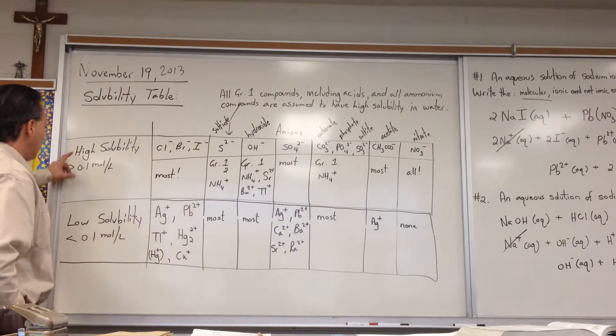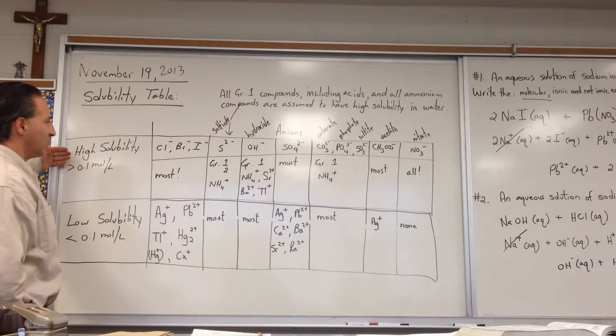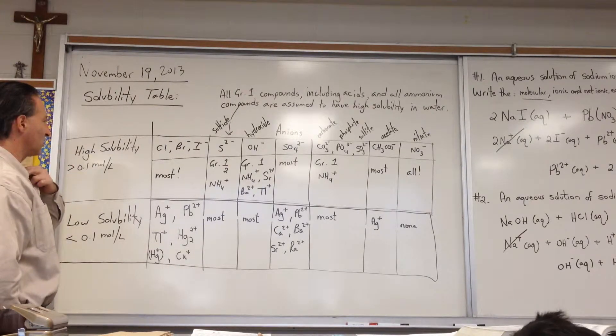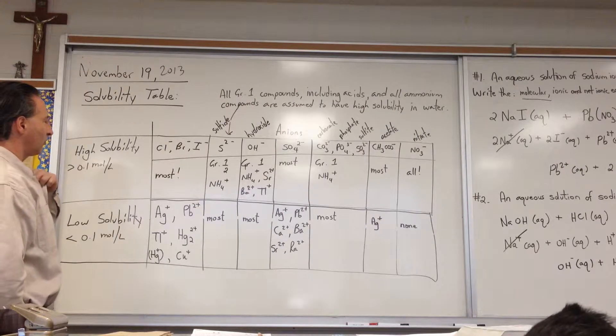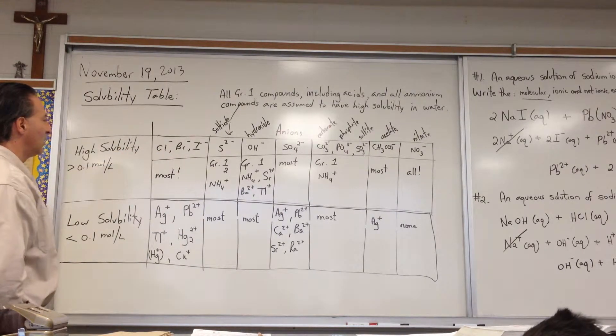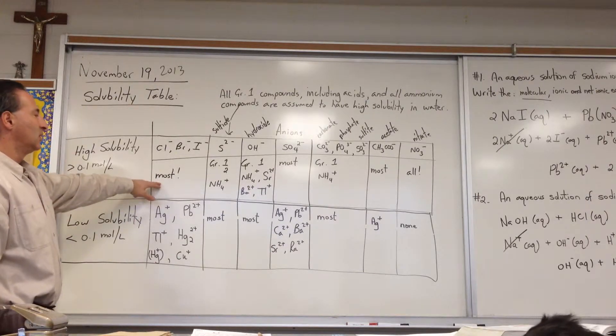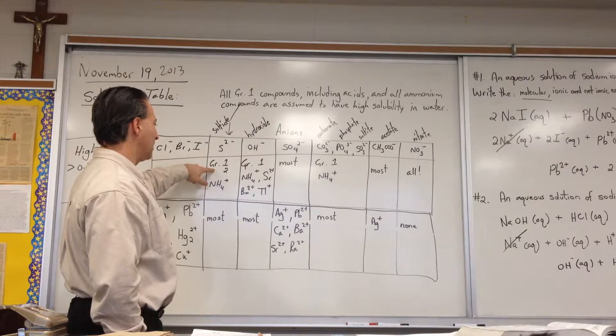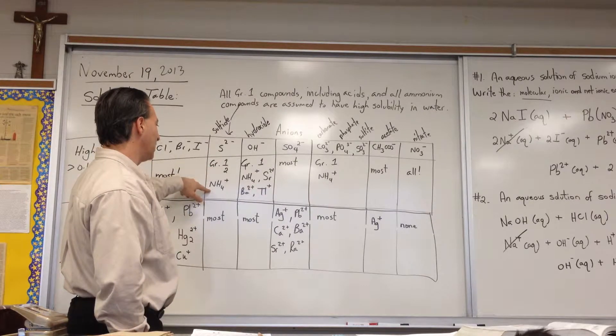I've made the table into two tiers: the high solubility and the low solubility salts. High solubility salts, like chlorides, bromides, iodides, halogens - most of them are soluble. Sulfides are soluble if they're mixed with group 1, group 2, and ammonium.